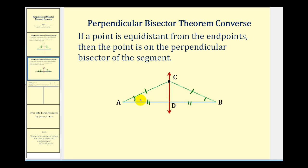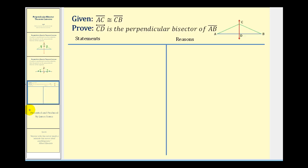Then, given that angle ADC and angle BDC form a linear pair and are congruent, they must measure 90 degrees. Therefore, line CD would be perpendicular to segment AB. This proof is a little bit involved, but let's go ahead and write it up.